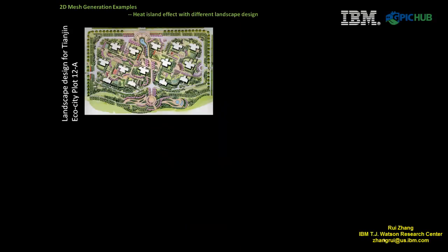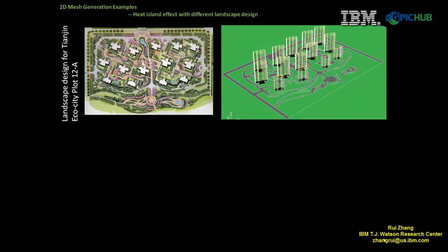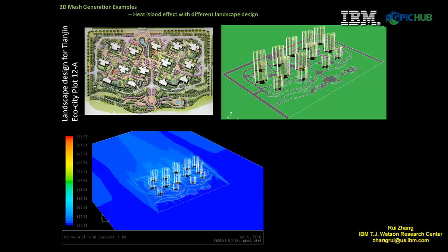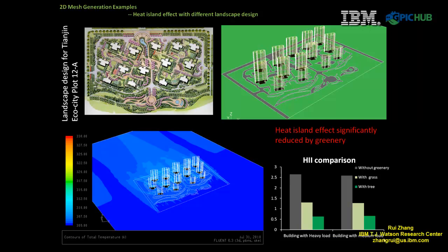The meshing algorithm was also used to study the heat island effects under different landscape designs. The mesh was generated to preserve all the curves of the landscape design correctly, and then simulation was carried out assuming the curved surfaces are covered with either trees, grass, or concrete. And the results show the heat island effect under concrete coverage is larger than 2.5, while the heat island effect under tree coverage is less than 1.